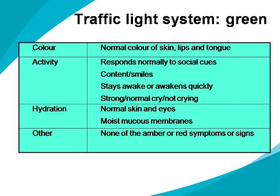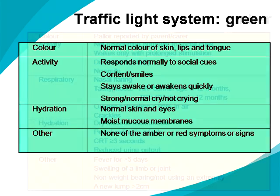So when is the traffic light system green? The traffic light system is green when we take into account colour, activity, hydration and other symptoms and signs. For colour: normal colour of skin, lips and tongue. For activity: the patient responds normally to social cues, is content or smiles, stays awake or awakens quickly, and has a strong or normal cry or is not crying. In terms of hydration: normal skin and eyes and moist mucous membranes. And in terms of other symptoms and signs: none of the amber or red symptoms or signs.